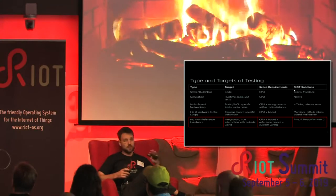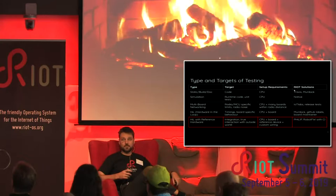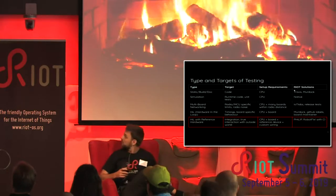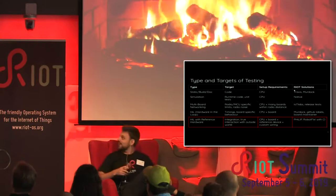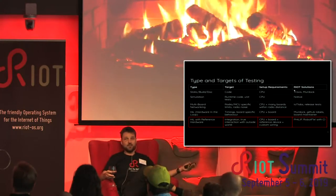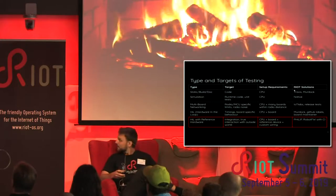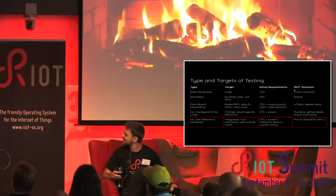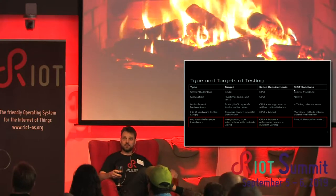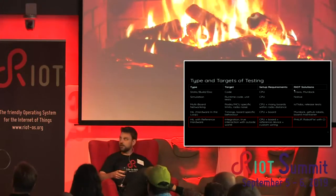Let's start by saying what kind of tests are there. You have your basic static and build tests, which require a CPU — sometimes a large CPU — and we take care of that in Riot with Murdoch. You also have simulation tests, which can be handled with native. I want my 2 plus 2 function to return a 4, and it better return that 4. Multi-board networking: we are an IoT operating system, so it's very important that we test the networking aspect of it. IoT Labs does a fantastic job and it's well integrated with Riot.